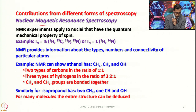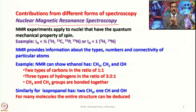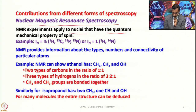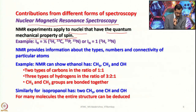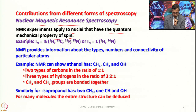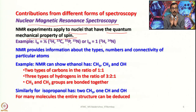Nuclear magnetic resonance spectroscopy plays an important role when we have NMR-active nuclei in the molecule. NMR experiments apply to nuclei that have the quantum mechanical property of spin. All nuclei with spin I = 1/2, such as ¹H, ¹³C, ³¹P, and ¹⁵N, or nuclear spin I = 1 such as ²H and ¹⁴N, provide information about the types, numbers, and connectivity of particular atoms.